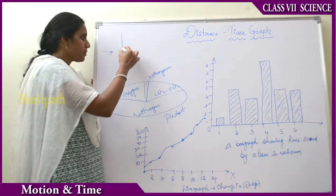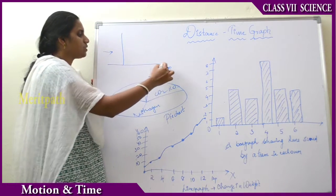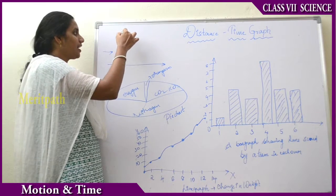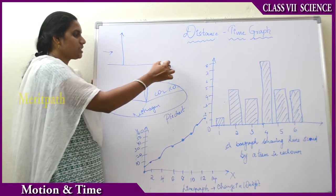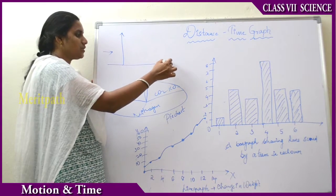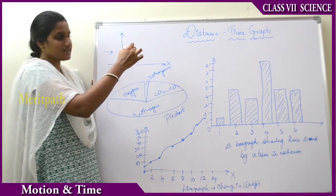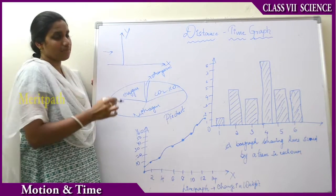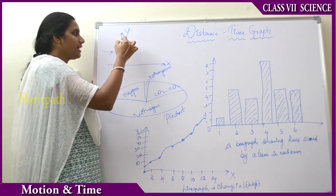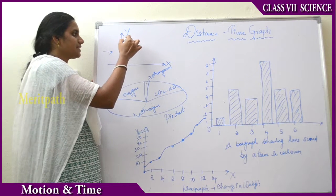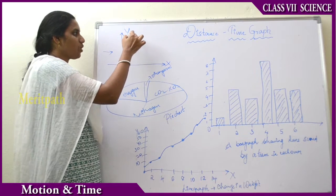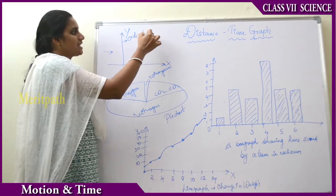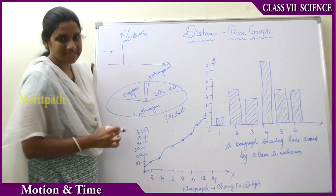The graph paper consists of horizontal and vertical lines. The horizontal line is known as the x-axis and the vertical line is known as the y-axis, plotted on a coordinate axis. The y-axis is also known as the ordinate axis and the x-axis is also known as the abscissa.